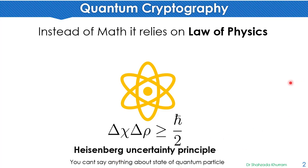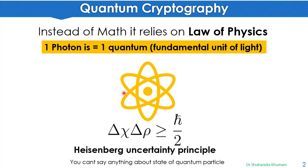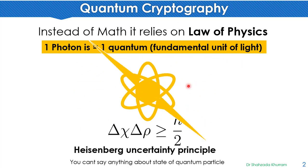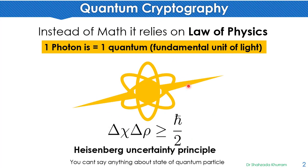Which particles are we talking about? Photons. One photon is basically equal to one quantum, which is the fundamental unit of light. Photons' property is that they are always moving in a spin, and they can change different states by passing through filters.